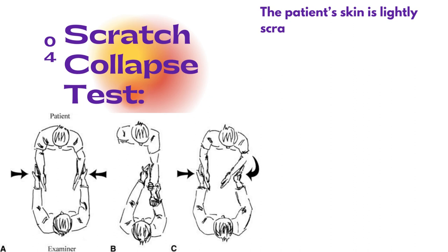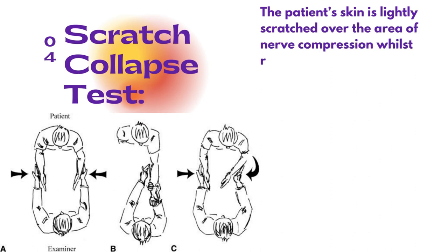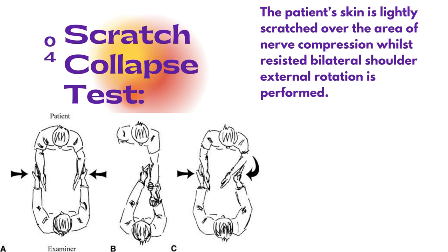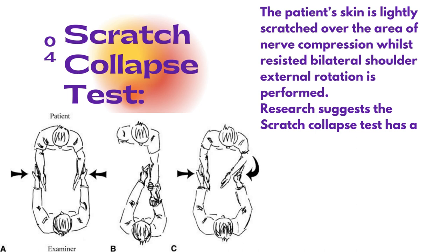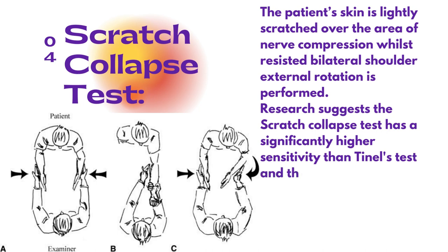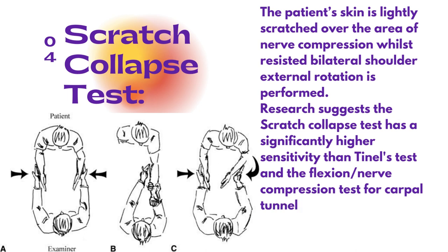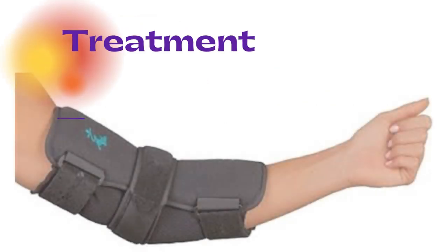After the tunnel sign test, there comes the scratch collapse test. Researchers suggest that the scratch collapse test has significantly higher sensitivity than the tunnel sign test and flexion nerve compression test for carpal tunnel and cubital tunnel syndromes. To perform this test, the patient's skin is lightly scratched over the area of nerve compression, and then bilateral shoulder external rotation is performed and resisted.